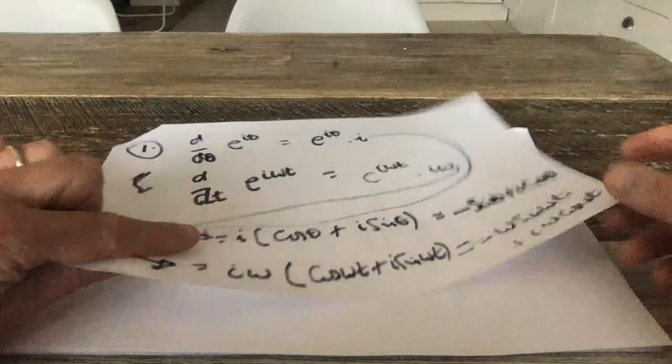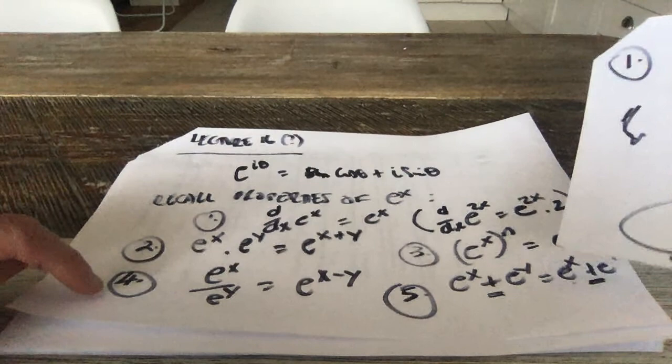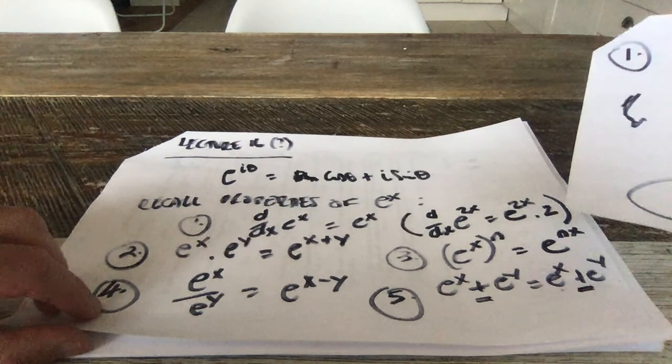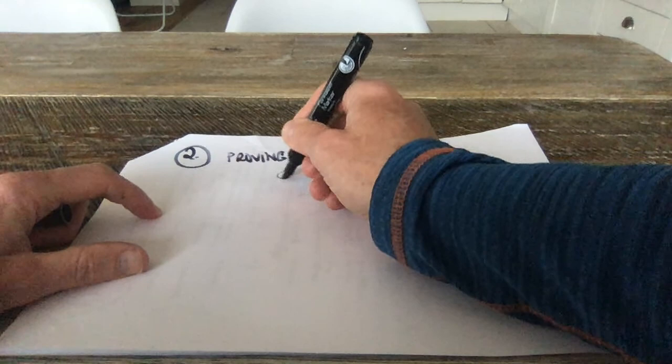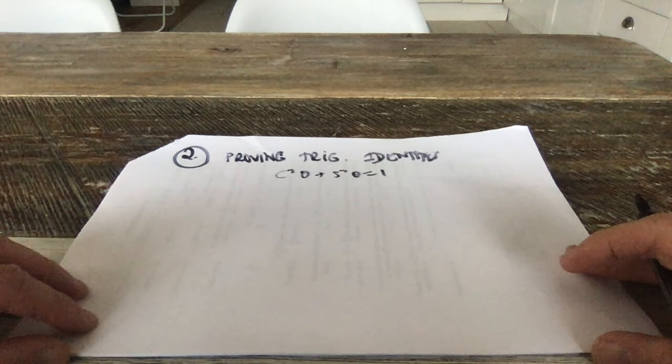Now, another important application is proving trigonometric identities using complex exponentials — a kind of nerdy aside but very useful. These identities occur throughout your studies. If I look at e^(i·2θ), on the right-hand side I get cos 2θ plus i sin 2θ. That's nothing new — I've just replaced θ by 2θ. But now I need to be creative with the left-hand side.